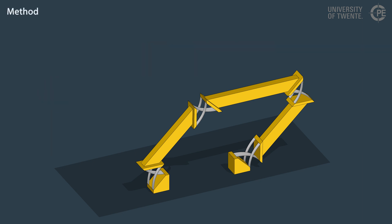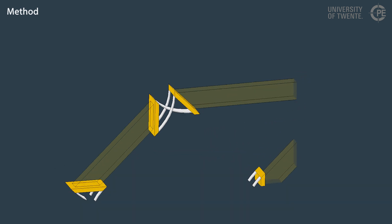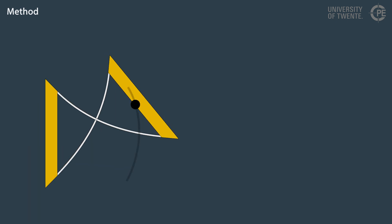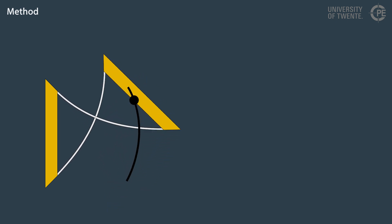Flexure mechanisms typically consist of multiple high stiffness links and multiple flexure joints. The flexure joints only allow large motion in specific directions. Because this motion is a property of the joint, each flexure joint can be analyzed separately.